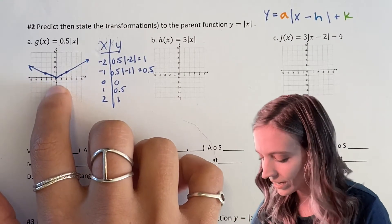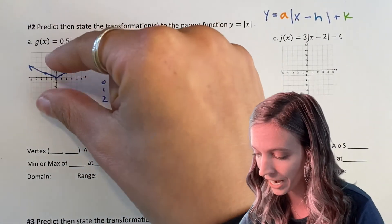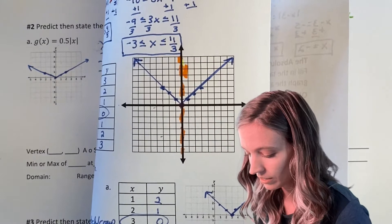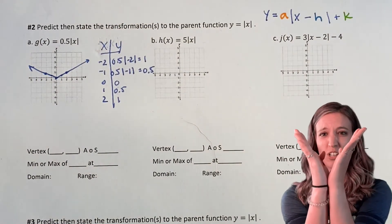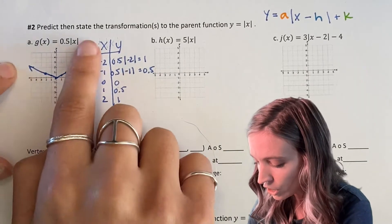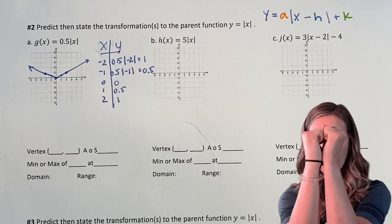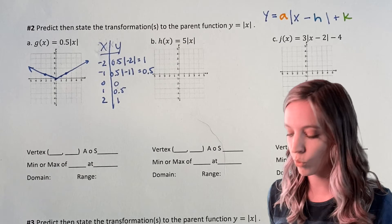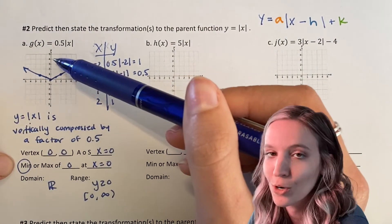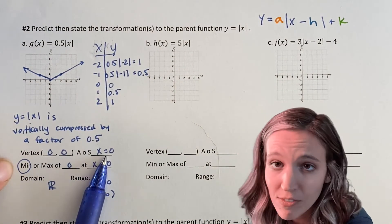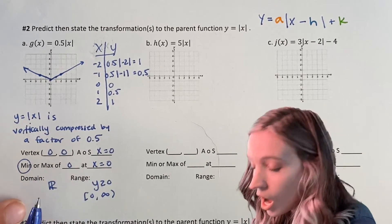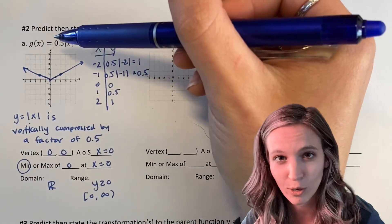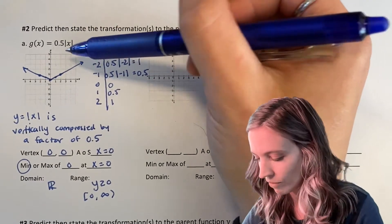After plotting those points, does it look like a vertical stretch or a vertical compression compared to the parent function? It's looking like a compression — the graph got squished down and a little wider. So instead of going up one over one from the vertex at zero, zero, I'm now going up one over two. It was a vertical compression by a factor of one half. The vertex is zero, zero; axis of symmetry x equals zero; min of zero; domain all reals; range y ≥ 0.